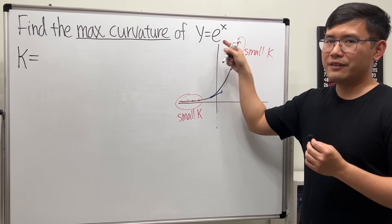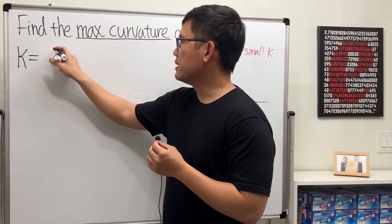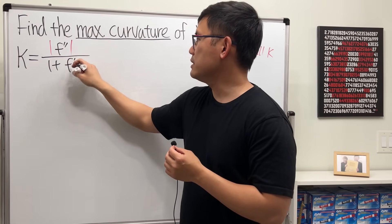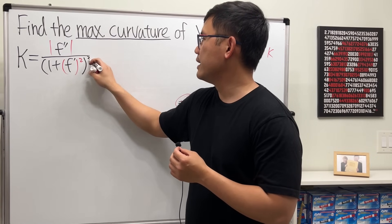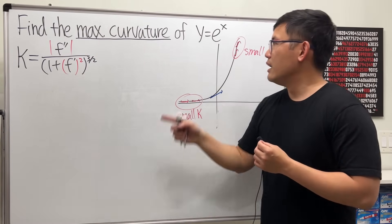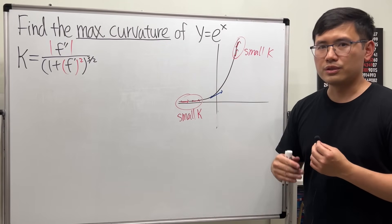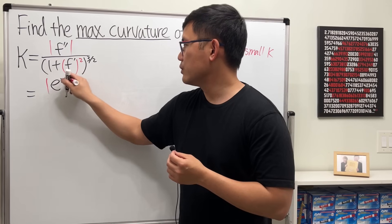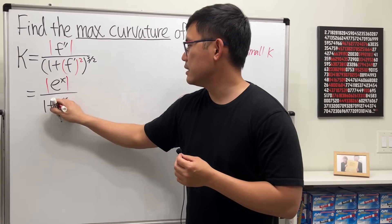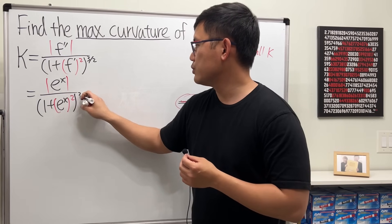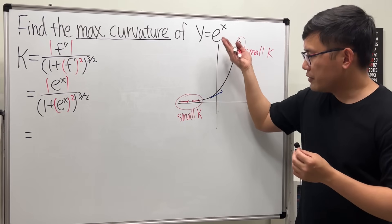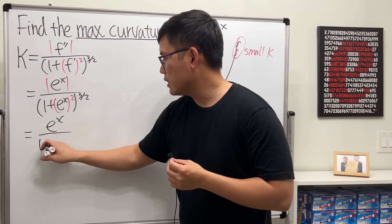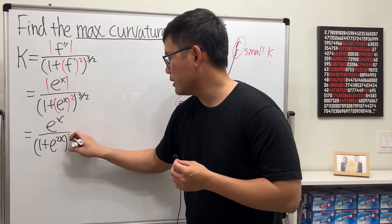We are given y is equal to f of x, so just use the curvature formula: take the absolute value of the second derivative, divided by 1 plus the first derivative squared, raised to the 3/2 power. I chose e to the x because its derivative is always e to the x. So this is e to the x over 1 plus e to the 2x, raised to the 3/2 power. Since e to the x is always above the x-axis, we don't need the absolute value.